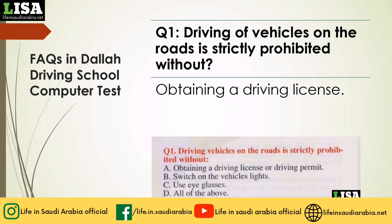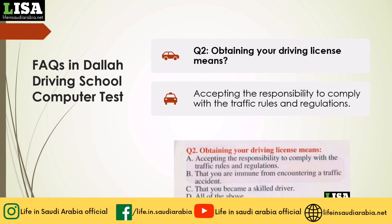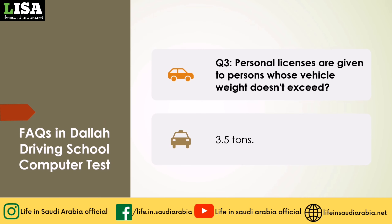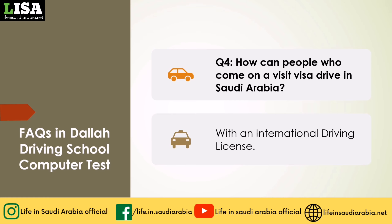Section 1 — Frequently asked questions. Q1: Driving of vehicles on the roads is strictly prohibited without? Answer: Obtaining a driving license. Q2: Obtaining your driving license means? Answer: Accepting the responsibility to comply with the traffic rules and regulations. Q3: Personal licenses are given to persons whose vehicle weight doesn't exceed? Answer: 3.5 tons. Q4: How can people who come on a visit visa drive in Saudi Arabia? Answer: With an international driving license.